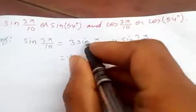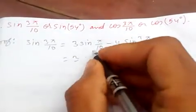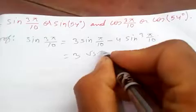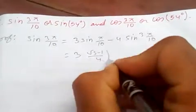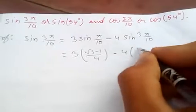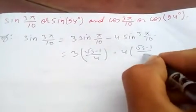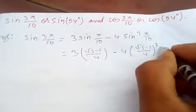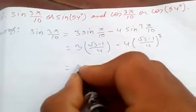Now, sin(π/10) is (√5-1)/4. So we substitute this value: minus 4 times ((√5-1)/4)³.